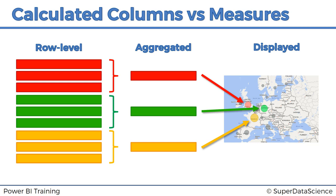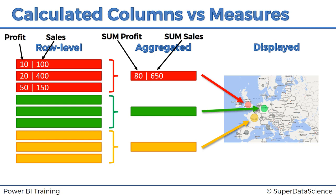Now, what are calculated columns? Let's imagine we have some data — say profit values of 10, 20, 50, and sales values of 100, 400, 150. So $10 profit and $100 sales, $20 profit and $400 in sales — the item was sold at $400 but the profit is only $20 due to expenses. The aggregation adds up the profit (sum = 80) and adds up the sales (sum = 650). What we visualized as the size of the bubble was the sum of sales — pretty straightforward.